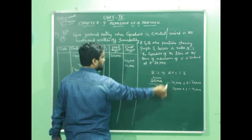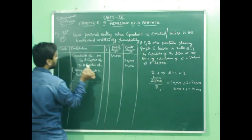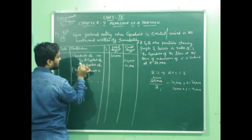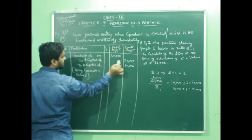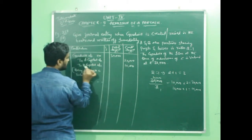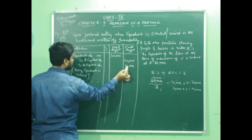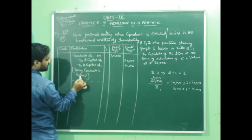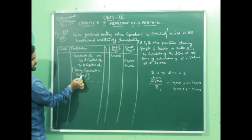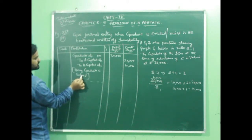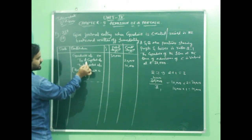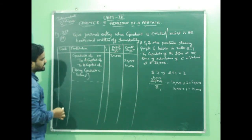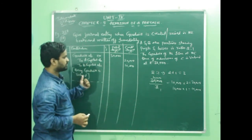When goodwill is valued, the entry will be recorded as: Goodwill Account debit 30,000; to A Capital Account 20,000; to B Capital Account 10,000. The narration will be: being goodwill valued, or it can also be written as being goodwill credited to old partners in their old profit sharing ratio.